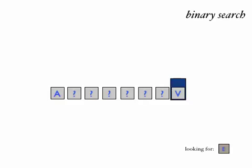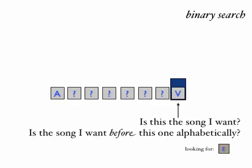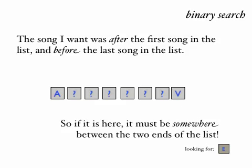One thing we can do is jump straight to the last thing in the list and find out what's there. In this case it's V, the song V. Is song V the one we want? No, it's not. But we can ask: is the song we're looking for before V alphabetically? Yes — we're looking for E, so it's before V. So we know that if the song is going to be anywhere in this alphabetically sorted list, the song E must appear somewhere between the left-hand side and the right-hand side. We'll find it between A and V.